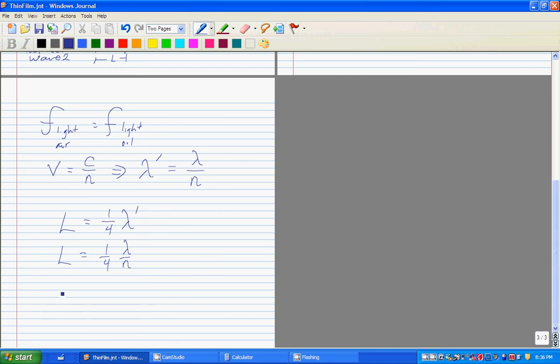This is the thinnest film possible to totally reflect the ultraviolet light. Remember, if the thickness was half of a wavelength, we got total transmission. So the next thinnest, let's call this L1 and this L2, is going to be three-quarters of a wavelength.